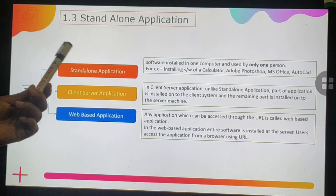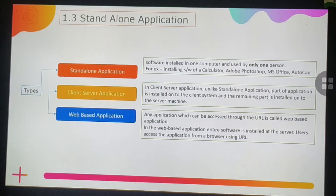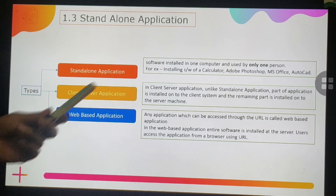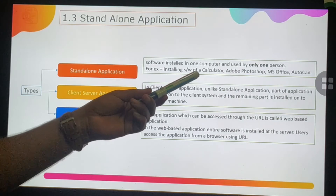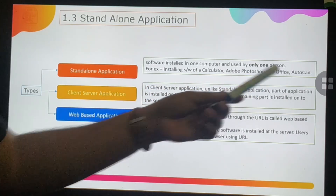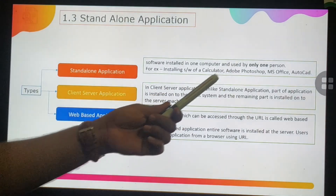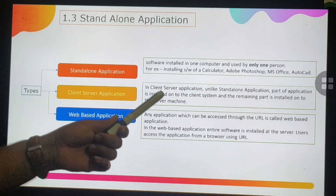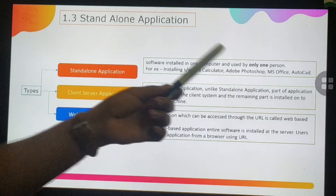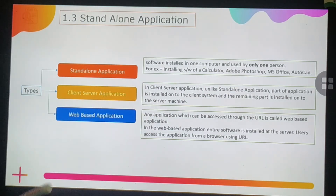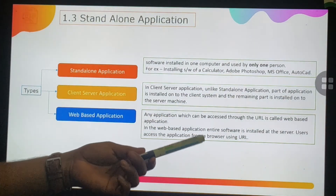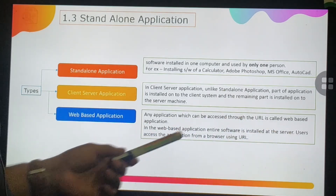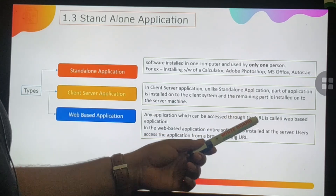Standalone applications are of three types: standalone application, client-server application, and web-based application. A standalone application is software installed on one computer and used by one person — examples include calculator software, Adobe Photoshop, MS Office, and AutoCAD. In a client-server application, part is installed on the client side and the remaining part on the server machine. A web-based application is any application accessible through a URL, with software entirely installed on the server.